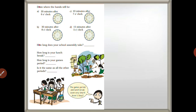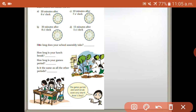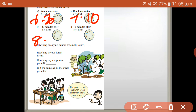Draw where the hands will be. 20 minutes after 6 o'clock — the answer is 6:20. 10 minutes after 7 o'clock — so 7:10. 30 minutes after 8 o'clock — 8:30. 15 minutes after 5 o'clock — 5:15.